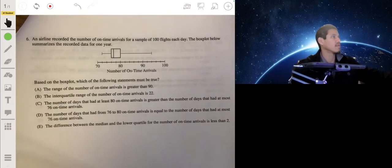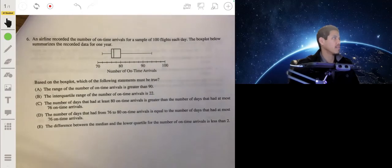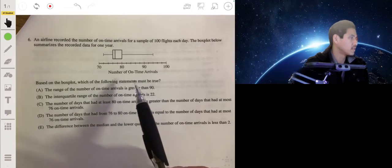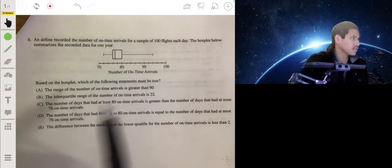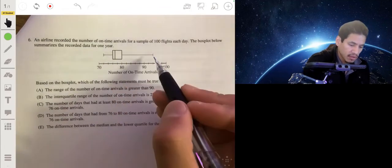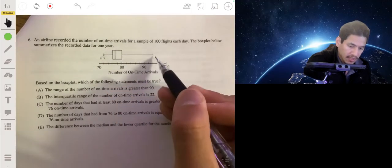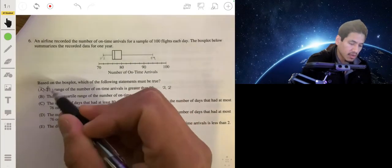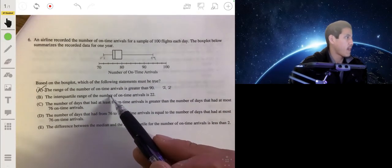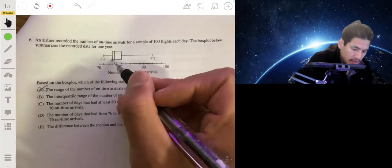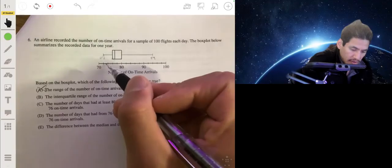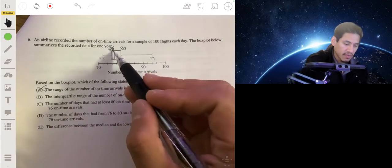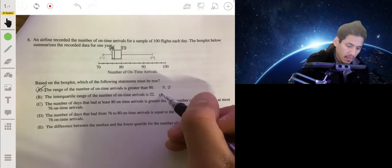An airline recorded the number of on-time arrivals for a sample of 1,000 flights each day. The box plot below summarizes the recorded data for one year. Based on the box plot, which of the following statements must be true? The range for the number of on-time arrivals is greater than 90. Well, the range is the distance from the smallest to the largest - this is 72 and that's 94. So the range is only 22. So that's wrong. The interquartile range is the distance from Q1, or from here, to Q3. That would be 76 and this is at 80. So the IQR is 76 to 80, or 4. So that's wrong.